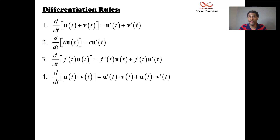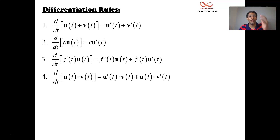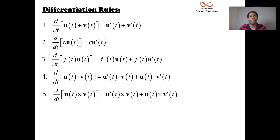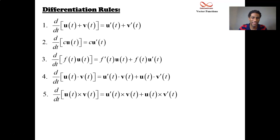What about a dot product between two vectors? I'm going to take the derivative of that. It's a product — product rule. Derivative of the first dotted with the second, plus the first dot the derivative of the second. What about the cross product? Same: derivative of the first cross the second, plus the first cross the derivative of the second. Product rule.